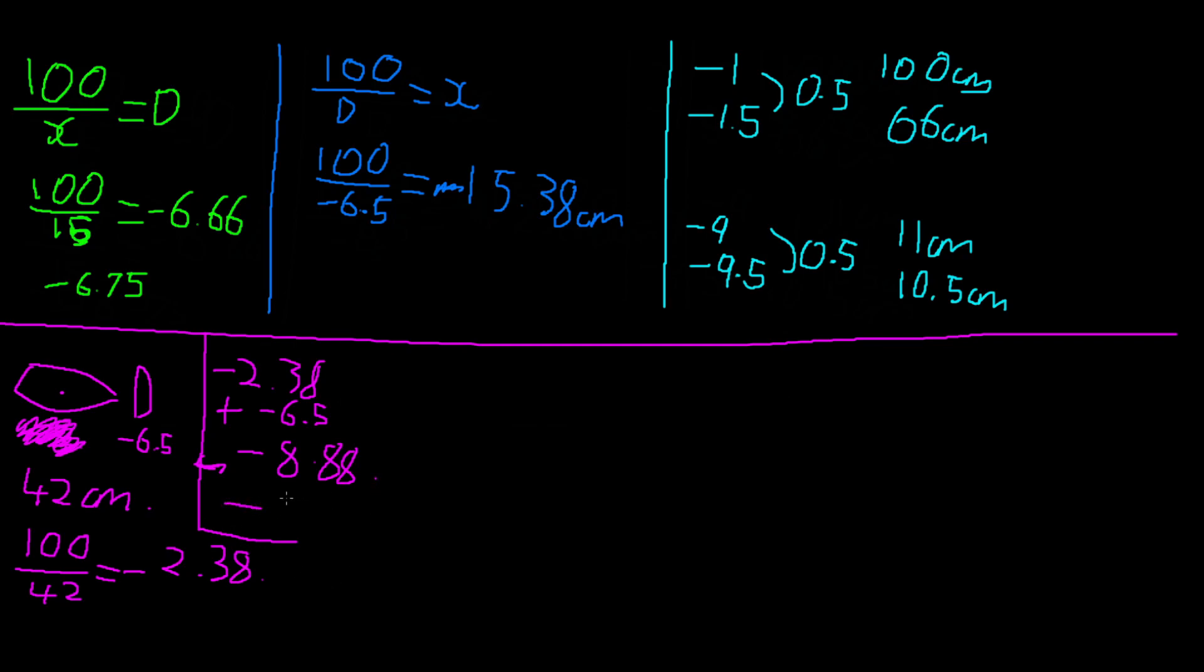And that gives us an answer of minus 8.88. So rounding up, this would be a myopia value of minus 9. So what we're saying is that if you measure 42 centimeters and you were wearing these differentials, your real myopia value would be minus 9 after doing all the equations.